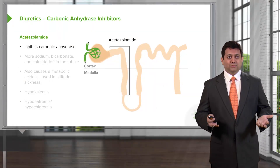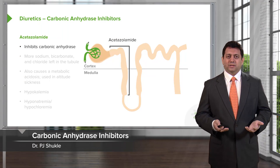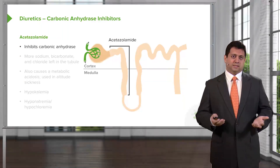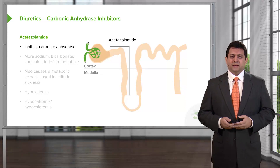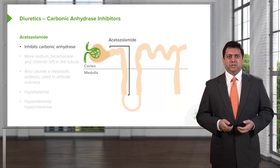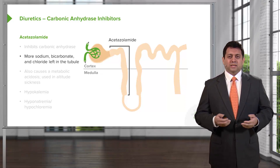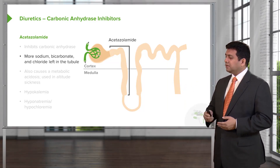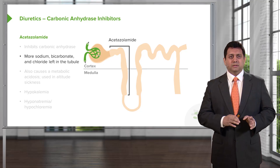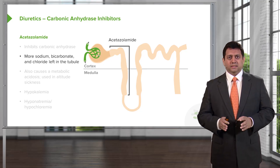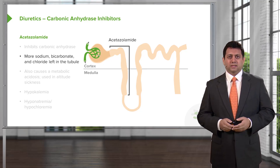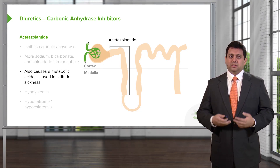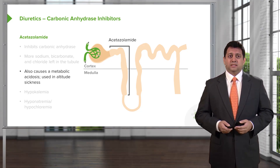The next class of drugs are the carbonic anhydrase inhibitors. The prototypical drug in this class is acetazolamide. We don't use it that much in hypertension, but we do use it in other areas. What it does is inhibit carbonic anhydrase, leaving more sodium, bicarbonate, and chloride in the collecting tubules. This results in a metabolic acidosis, so it is used in altitude sickness.